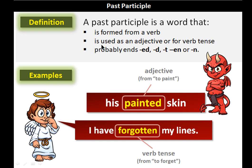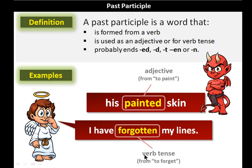Next is the past participle. The past participle is also formed from a verb and is used as an adjective or in a verb tense. Past participles typically end with '-ed', '-d', '-t', '-en', or '-n'. For example, 'his painted skin' — 'painted' ends in '-ed' and comes from the verb 'to paint'. Another example is 'forgotten', which ends in '-en' and comes from the verb 'forgot'.